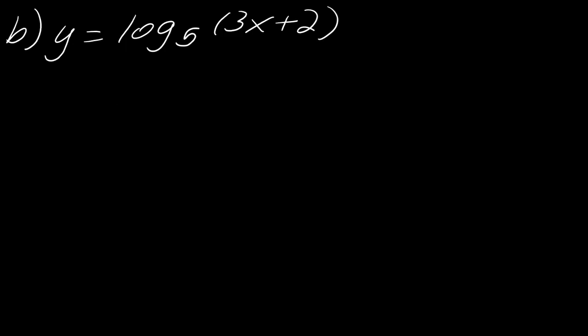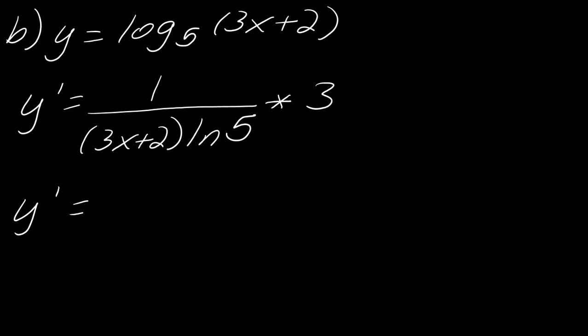For this other one, if I'm trying to find y prime, I use the chain rule. This will be one over, where there was that x, I'm going to replace it with three x plus two times the natural log of five. Now I multiply all of this by the derivative of this innermost function. This can be a little tricky to think through sometimes. The final answer here will be three over three x plus two times the natural log of five.